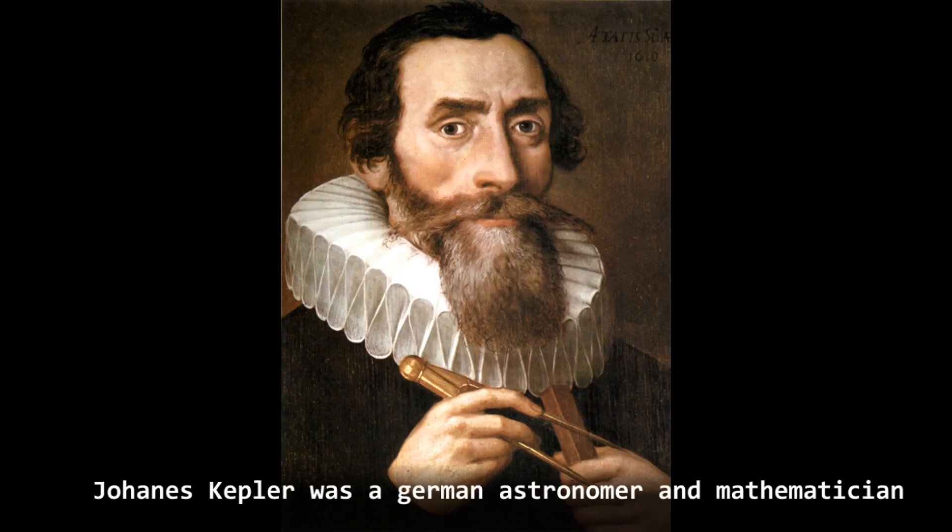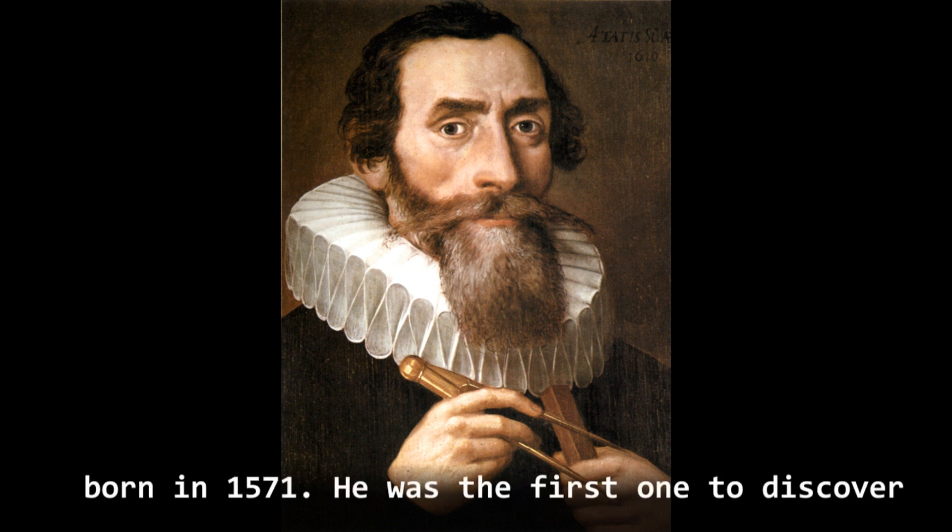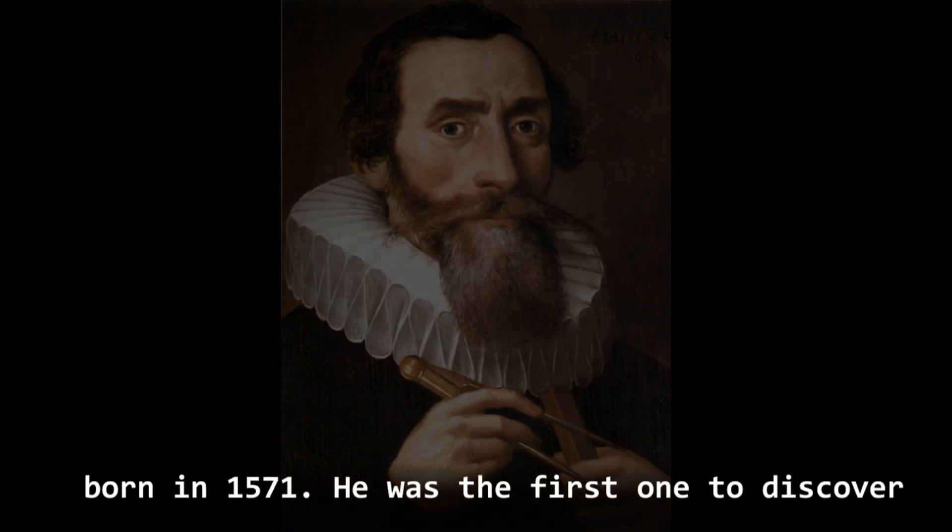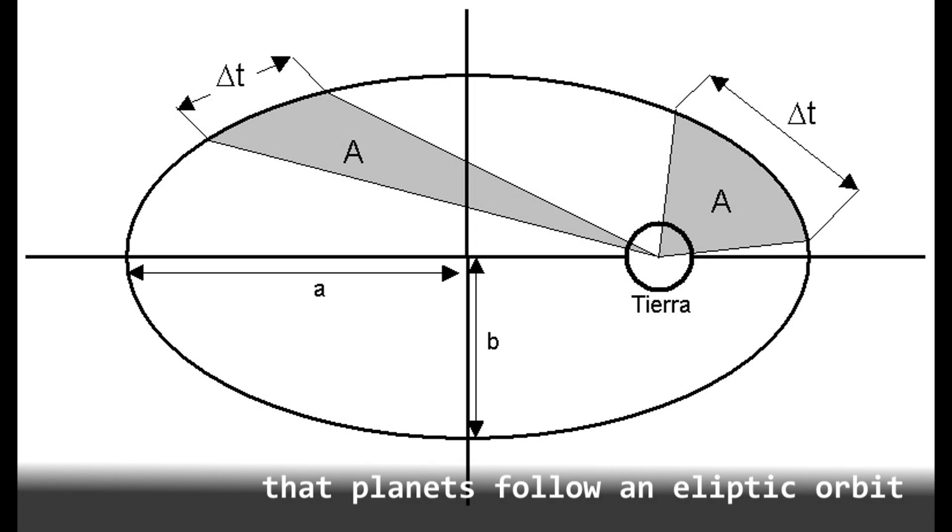Johannes Kepler was a German astronomer and mathematician born in 1571. He was the first one to discover that planets follow an elliptic orbit.